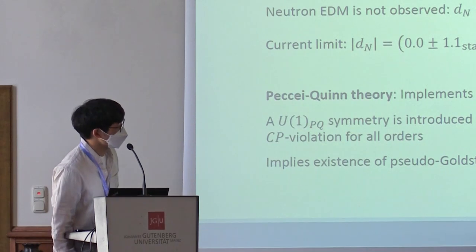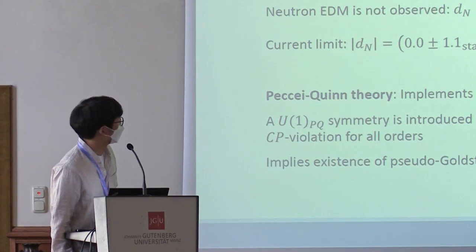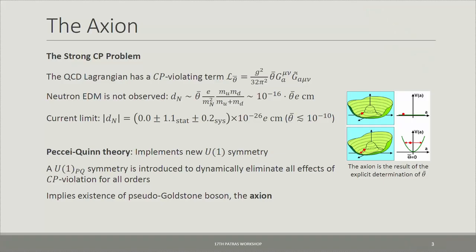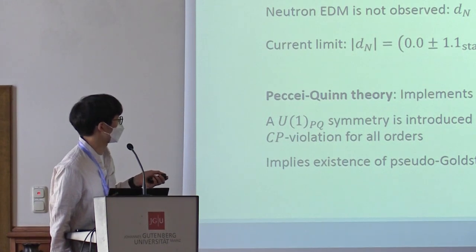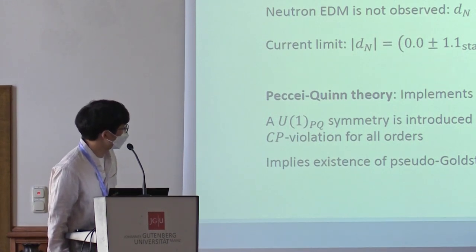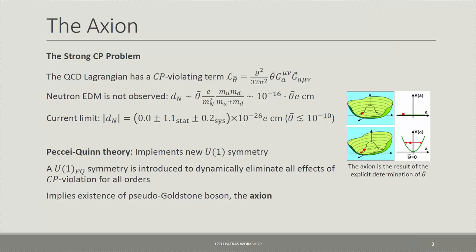The axion comes as a solution to the strong CP problem. In the QCD Lagrangian there is a CP-violating term, but unfortunately we do not observe it because it's very close to zero — much lower than theoretically expected. The Peccei-Quinn theory implements a new symmetry that dynamically eliminates these CP-violating effects, and this implies the existence of a particle called the axion.